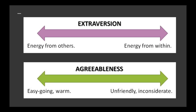The fourth trait is agreeableness. Do people describe you as easy going? Individuals high in agreeableness tend to be compassionate, open to helping others, and easy going. Alternatively, individuals low in agreeableness tend to be seen as unfriendly, rude, perhaps even inconsiderate, and they can be considered cold in personality.